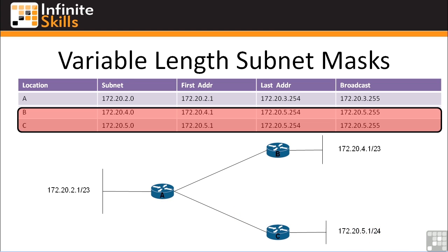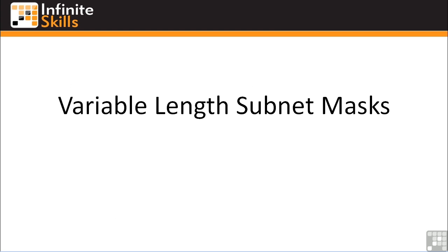As a network engineer, you'd have to go into location C and re-IP that entire location. If it's a brand new location, it's not a big deal. But if it's been there a while and has printers, firewalls, and all sorts of other things configured, it can be a real pain. So that concludes our discussion of the joys and pain of variable-length subnet masks.